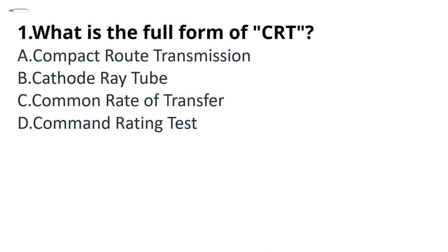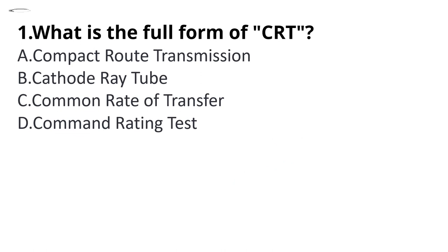What is the full form of CRT? Options: compact root transmission, cathode ray tube, common rate of transfer, and common rating test. A cathode ray tube is a vacuum tube containing one or more electron guns, producing a beam that is manipulated to display images on a phosphorescent screen. The image may represent an electronic waveform, pictures, radar targets, or other phenomena. The CRT on a television set is commonly called a picture tube. The correct answer is option B — cathode ray tube.